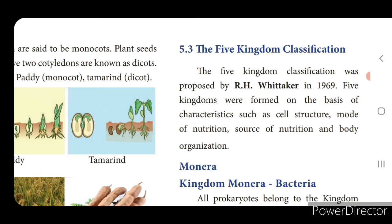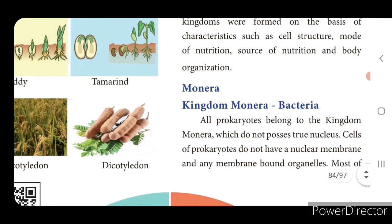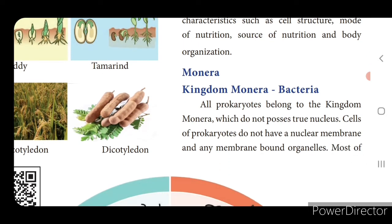Also the body organization - that is the structure of the body. There are five kingdoms; we will see one by one. First one is Kingdom Monera. Best example is bacteria. All prokaryotes belong to Kingdom Monera.